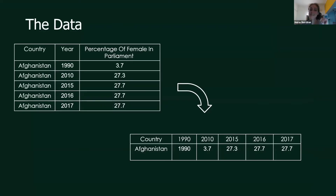One last thing before we dive into the results — I want to talk about the data for just a second. In the original dataset I had two tables, one for countries and one for continents, and each had three columns: country, year, and percentage of seats held by women in the given country and the given year. The first thing I did was convert it to time series format, which allowed me to look at temporal patterns and also understand what happened in specific years.